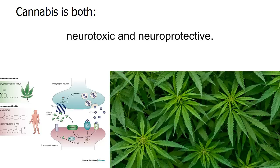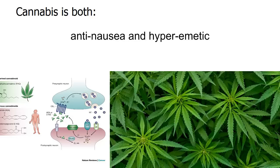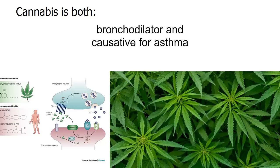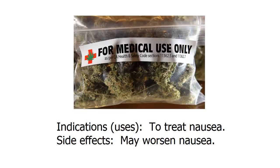Cannabis, for example, in nerve cells is both neurotoxic and neuroprotective. It increases anxiety and also lowers it. It reduces vomiting and nausea, or it can drive it to a new high called hyperemesis. It can kill cancer cells, or trigger them to become more resistant. It causes changes in the brain that mirror schizophrenia, yet in patients with schizophrenia it can help to manage their symptoms. It's a bronchodilator, and also can trigger asthma. It relaxes blood vessels, and also makes them constrict. This is not a good profile for a therapeutic drug, and I would argue not a good profile for a recreational drug either. It's a bit of a nightmare for a researcher trying to make sense of things.